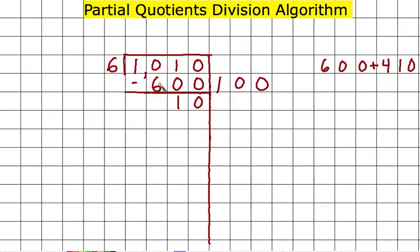0 minus 6, can't do that. So I'm going to borrow from the 1, rename. 10 minus 6 is 4, 410.